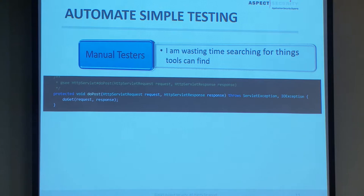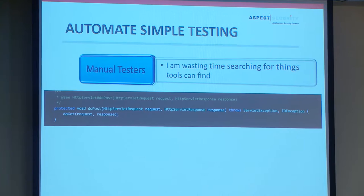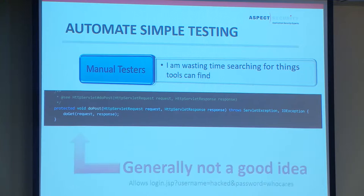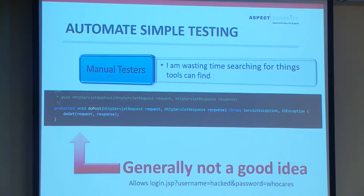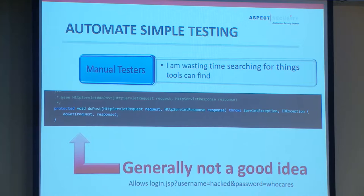In code review, we often see this pattern: a POST request comes in, the developer takes that content and immediately calls doGet, with all the actual business logic in the doGet method. This is a security issue because if you're submitting login credentials, this allows them to also be submitted via GET. As an attacker, you now have a vector to get the user to submit credentials via GET, which could be sniffed in traffic. It's not a good practice, and I don't want to look for it manually because it's a very obvious pattern.